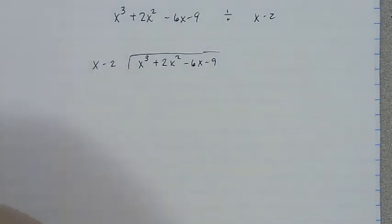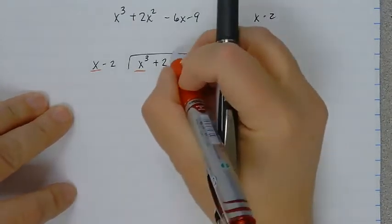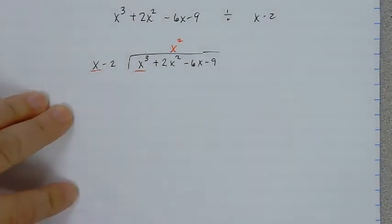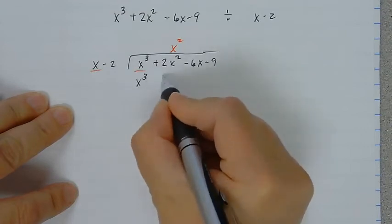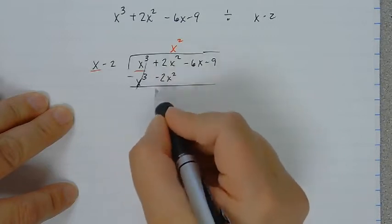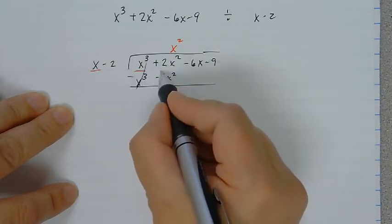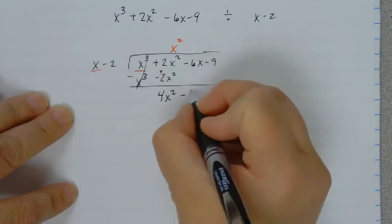This is similar to what we were doing before. I'm going to see what do I take times x to get x cubed? And that would be x squared. So I write it above the x squared. x squared times x is x cubed, minus 2x squared. Subtract. These cancel. 2 subtract negative becomes positive. 4x squared. Bring down your next term.